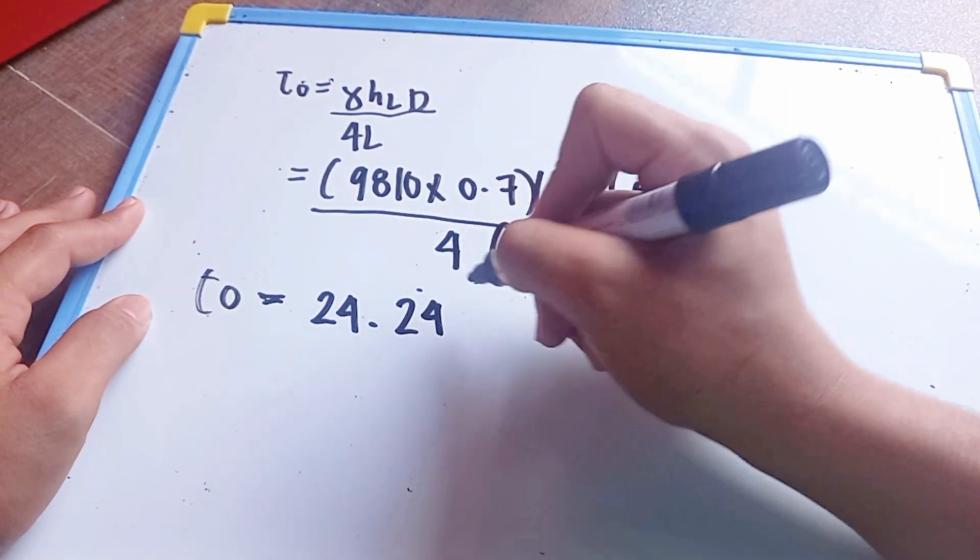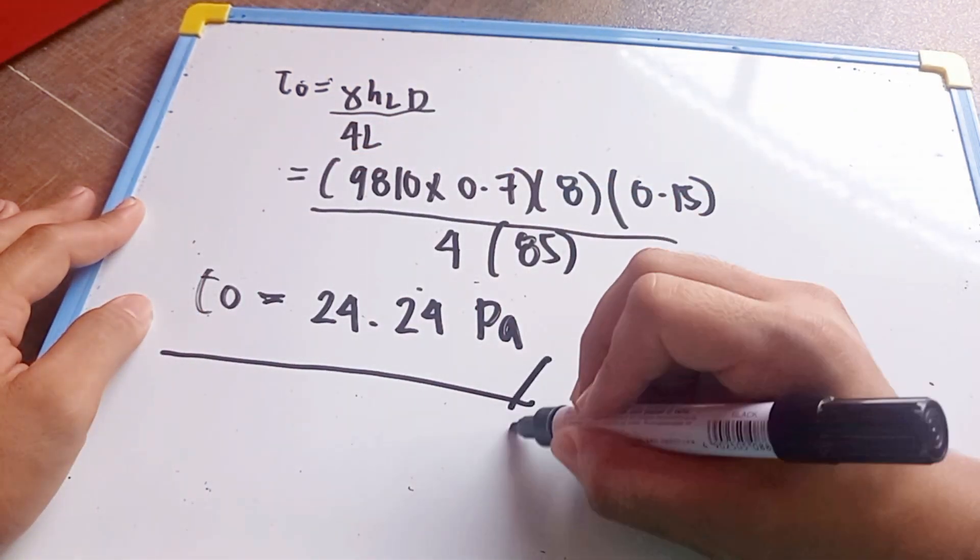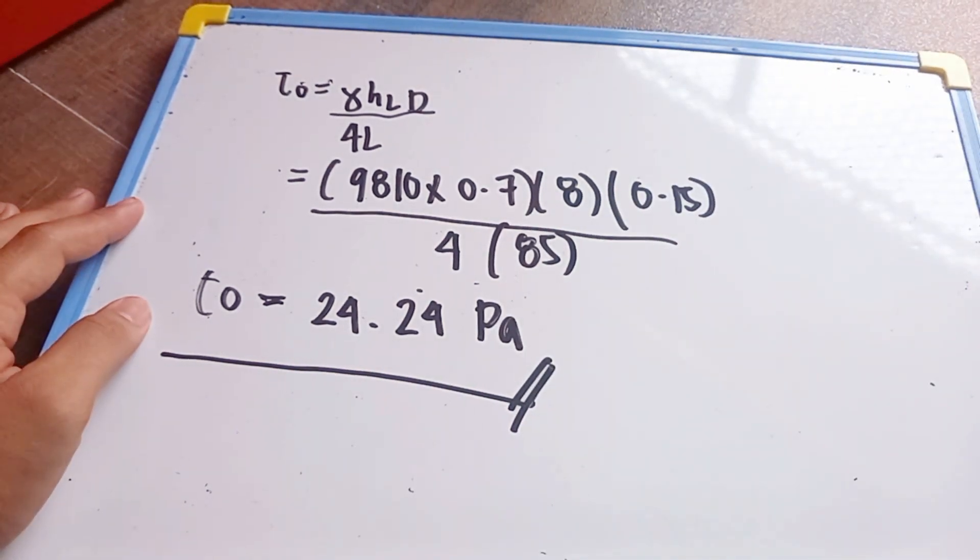24.24 Pascals. This is our final answer in solving the shear stress at the pipe's walls.